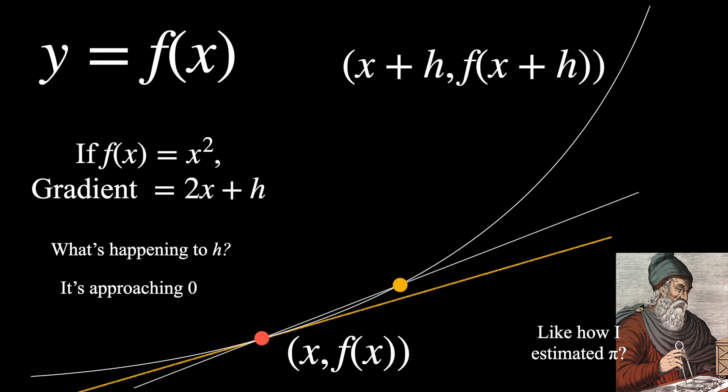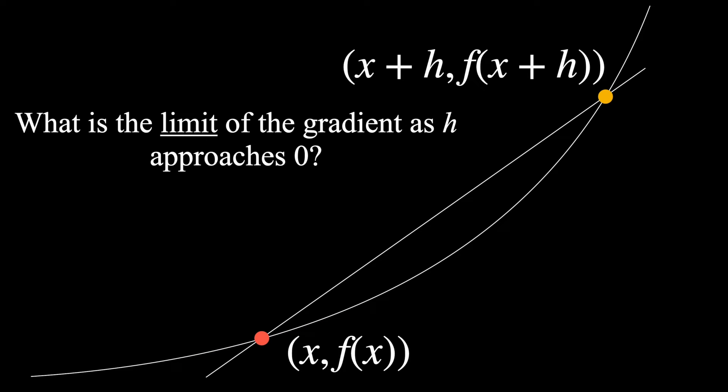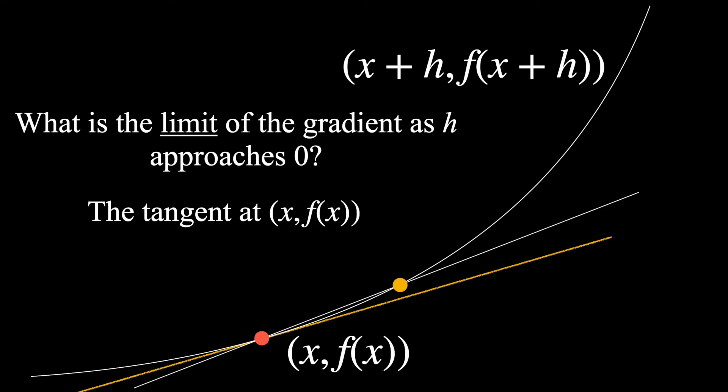So this question can be phrased another way. You can say, what is the limit of the gradient as h approaches zero? So as we move this point closer to the red point, what is the limit of the gradient? That's where we think the gradient is going to end up at when h reaches zero. And this is exactly what Newton and Leibniz proved, that as we look at the limit, as the difference between those points goes to zero, we can assume the gradient will be equal to the gradient of the tangent.